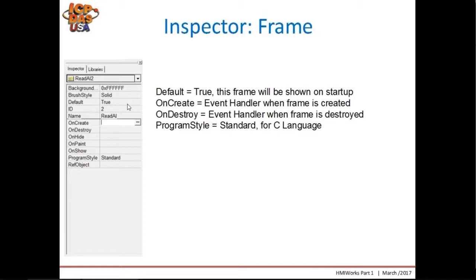If we click on the white frame, we will see the properties in the inspector at the right. We can, for example, change the background color of the frame. The default property is set to true, so this frame will be the one that shows when the screen starts up. We will change the name to Read AI, instead of Frame 1, to have a more descriptive name. Don't create a frame name with spaces or special characters.